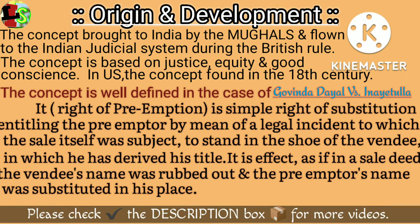Here, Mr. A can file a suit for preemption for the enforcement of his right. If A had a valid right, then the court will substitute the position of C with A. So there are three parties in this suit: one, the vendor that is Mr. B; two, the vendee that is Mr. C; and three, the preemptor that is Mr. A.